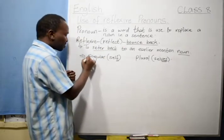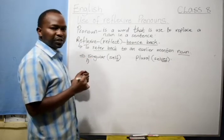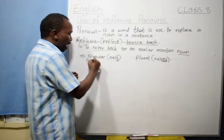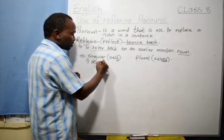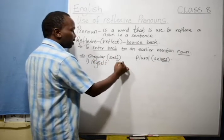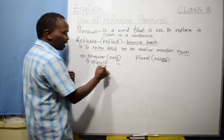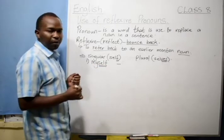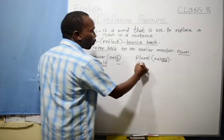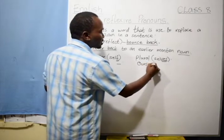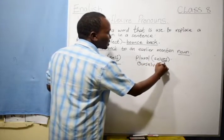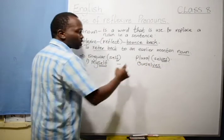The first reflexive pronoun, the first person reflexive pronoun we have is myself. Referring to myself. The plural of this reflexive pronoun will be ourselves.